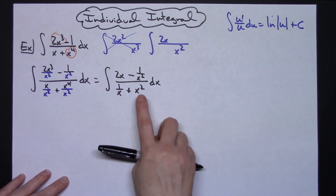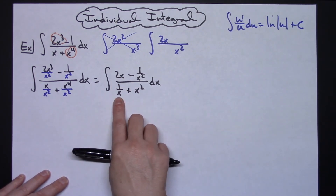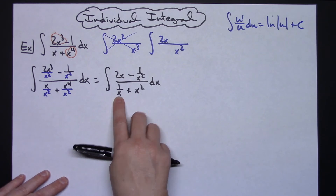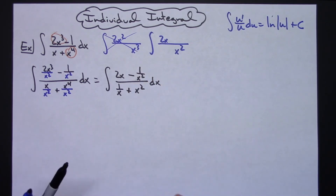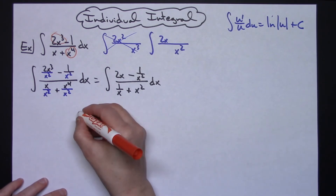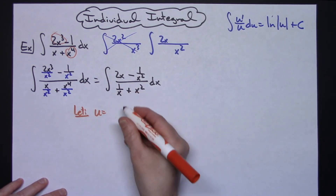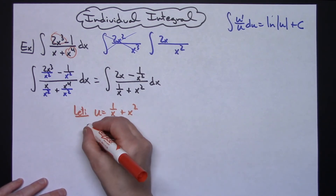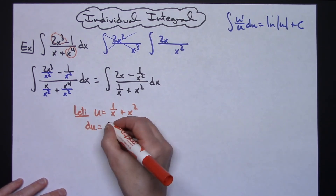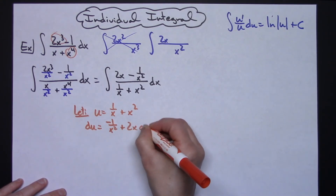Taking the derivative of x squared gives 2x, and taking the derivative of 1 over x gives negative 1 over x squared — which is exactly what we need. So let's go ahead and do a u-substitution. We're going to let u equal the denominator: 1 over x plus x squared. Taking the derivative of both sides, du equals negative 1 over x squared plus 2x, dx.